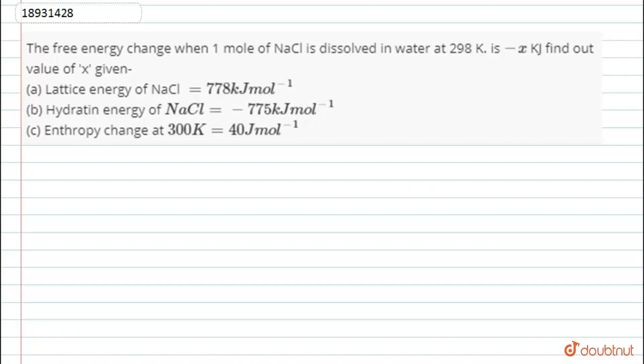Look, this question is that the free energy change when one mole of NaCl is dissolved in water at 298 Kelvin is minus x kJ. Alright, find out the value of x. Here we have given the lattice energy, hydration energy, entropy change. The value is given.